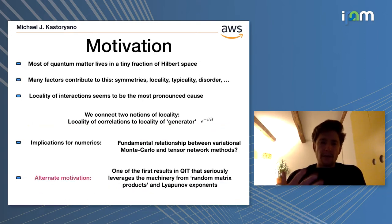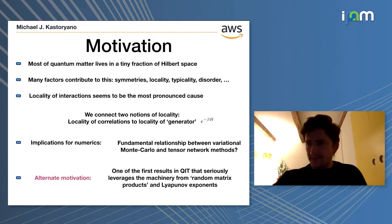So why might we care about this question? The motivation from the start is one of the main motivations of many-body physics and quantum information, which is that many-body states, most of them live in an extremely small fraction of Hilbert space. The reason for this can be manifold - it can be due to symmetries, typicality, disorder. But in quantum information, often locality is the one that enforces the strongest constraints on the type of states that might exist.